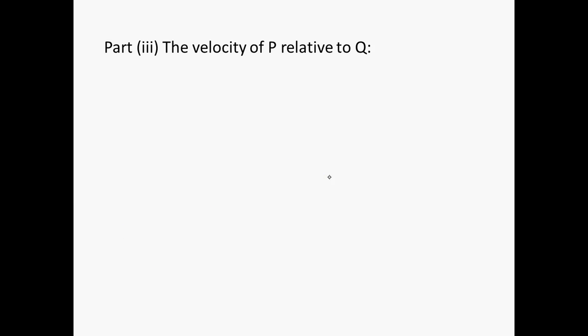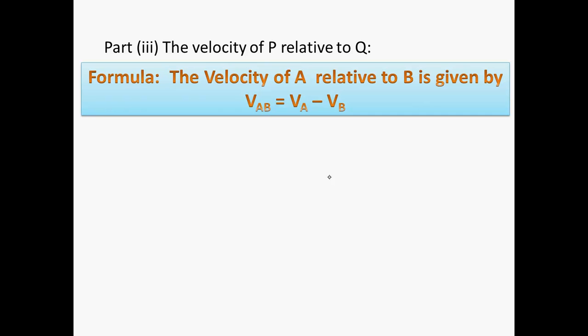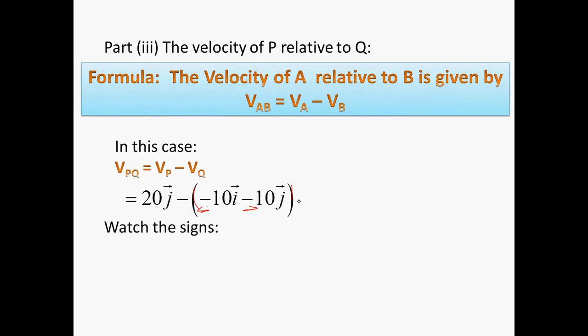Right. So, part 3 is the velocity of P relative to Q, and this is easy seeing as we've got them in I and J's. The formula is VAB is equal to VA minus VB. So, in this case, VPQ is equal to the velocity of P minus the velocity of Q, which breaks out like this. Just be careful of the signs. So, make sure to include that bracket around the outside. And if you're just changing the signs, you get plus 10i plus 30j.